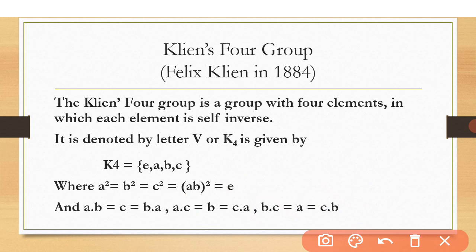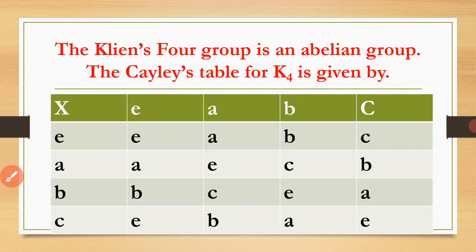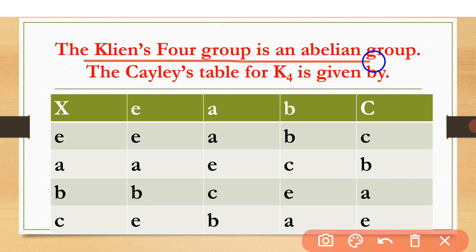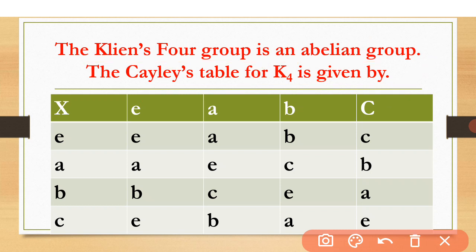Let's check its Cayley table. The Klein-4 group is Abelian. The elements of Klein-4 are E, A, B, C — written in both row and column. When the identity element is multiplied by E it gives E, by A it gives A, by B it gives B, by C it gives C. When A is multiplied by E it gives A. When A is multiplied by A, A² = E since A is self-inverse. When A is multiplied by B it gives the third non-identity element C. When A is multiplied by C it gives B.